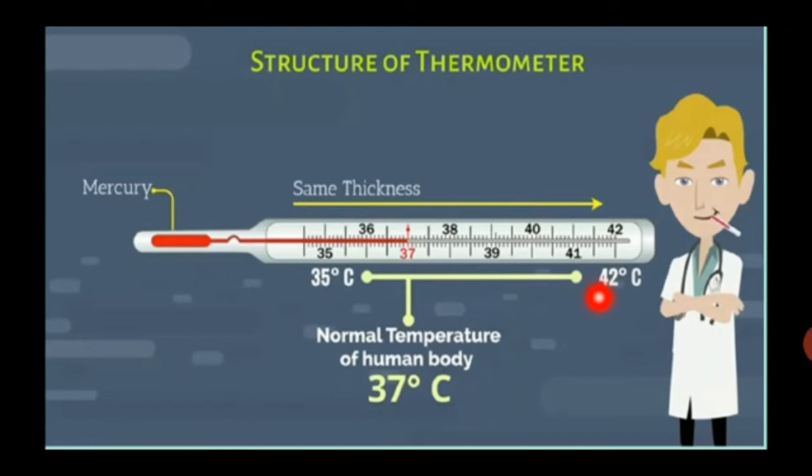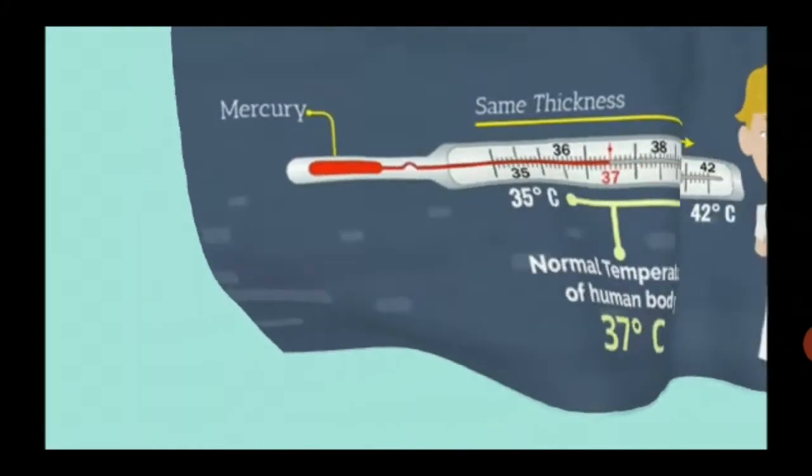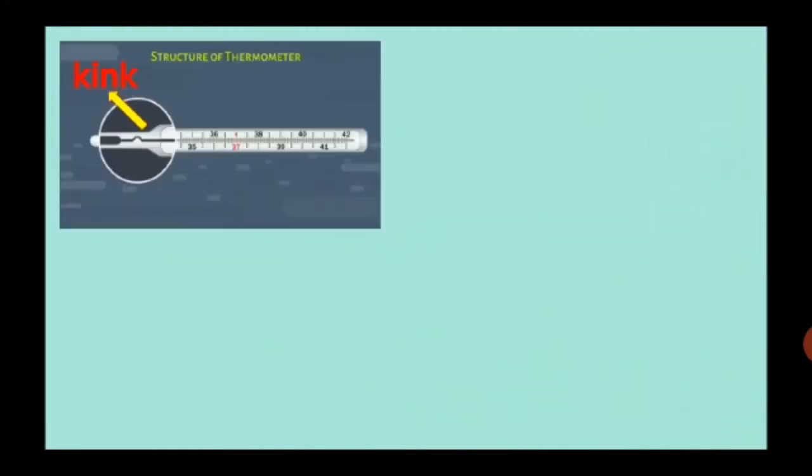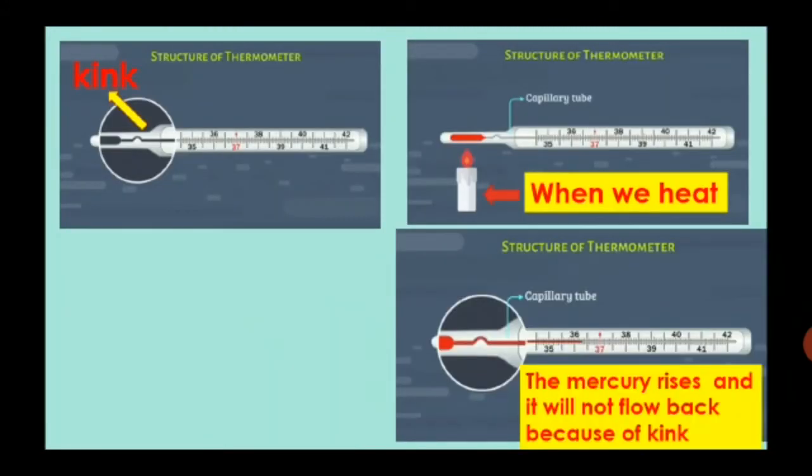Therefore, clinical thermometer has reading from 35 degrees Celsius to 42 degrees Celsius. Here, children, you must understand that 35 and 42 are numbers and degree Celsius is unit of temperature.